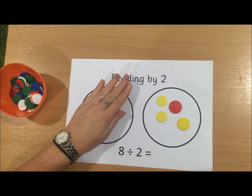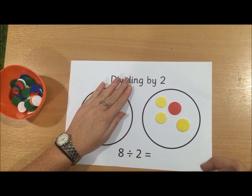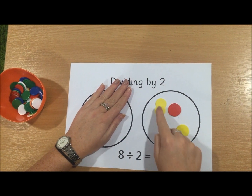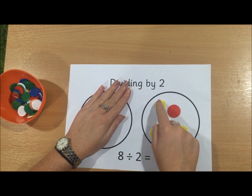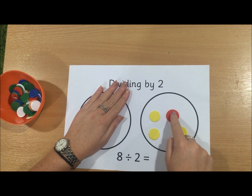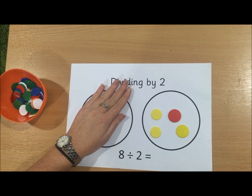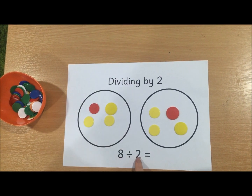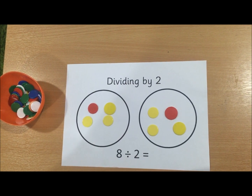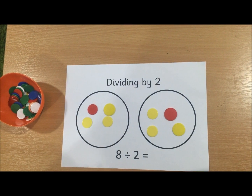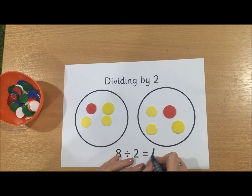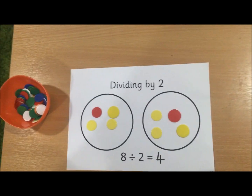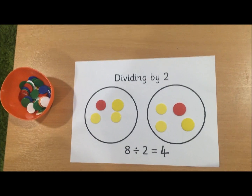One, two, three, four — that is your answer. So 8 divided by 2 equals 4. And that's how you divide.